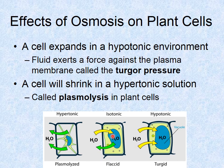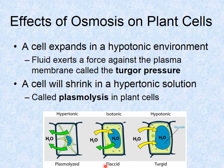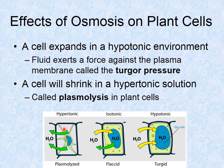In an isotonic solution, water flows in and out equally. The cell can carry out its functions but doesn't have turgor pressure — it is flaccid. A flaccid plant cell is on the verge of looking wilty. If a plant cell is put into a hypertonic solution, there is less water outside and a higher concentration of water inside, so water leaves the cell, the cell shrinks, and this is called plasmolysis. The plant would look very wilty.